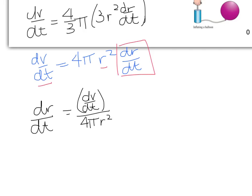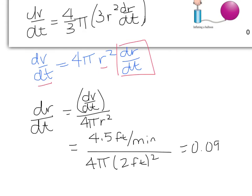If I plug in the numbers, I know that dV/dt was equal to 4.5, so I have 4.5 feet per minute. We're going to divide that by 4 pi, and my r value was 2 feet, and we're going to square that. This gives us approximately 0.09 feet per minute.